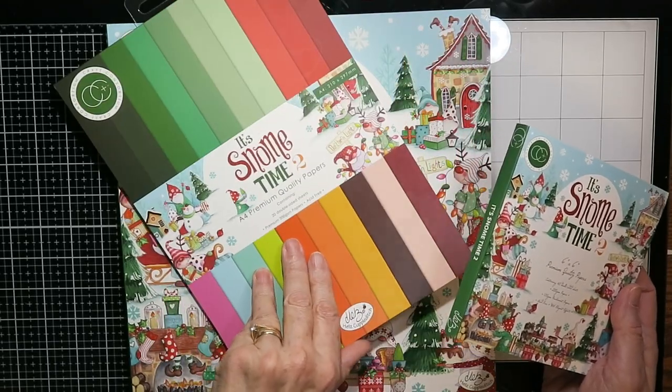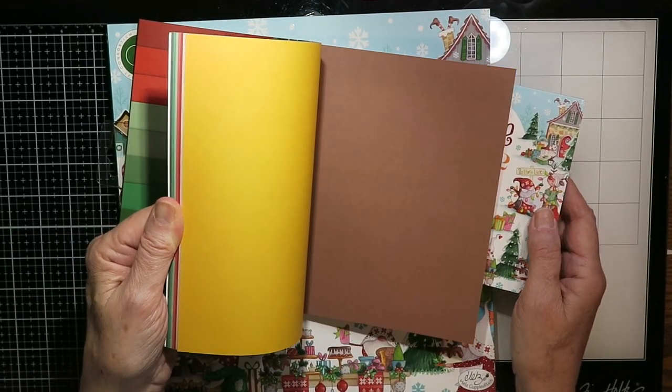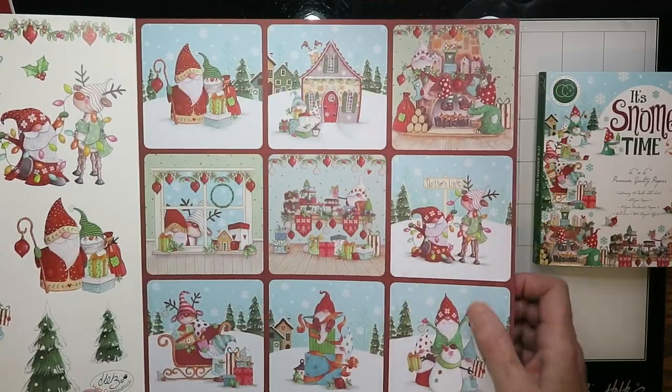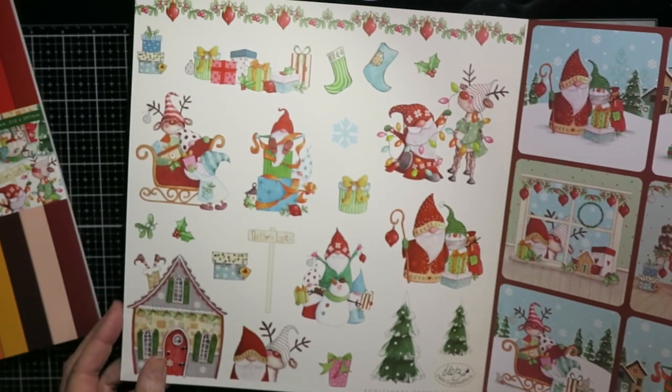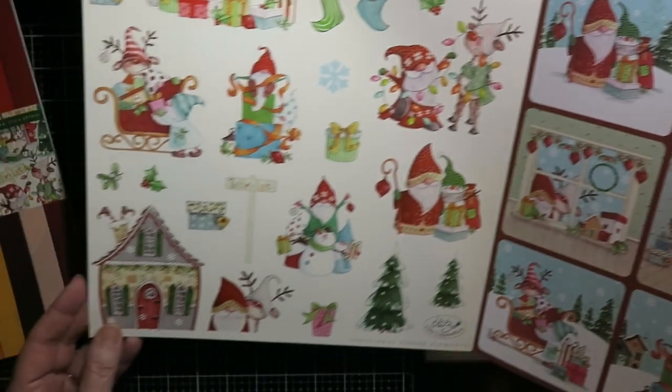This is the new Christmas collection by Helle's Coupeleditch and if you've followed any of Craft Consortium's releases you'll know that Helle's Coupeleditch always has the cutest most adorable releases. So this is Snowtime 2 and here's the 12x12 paper pack.